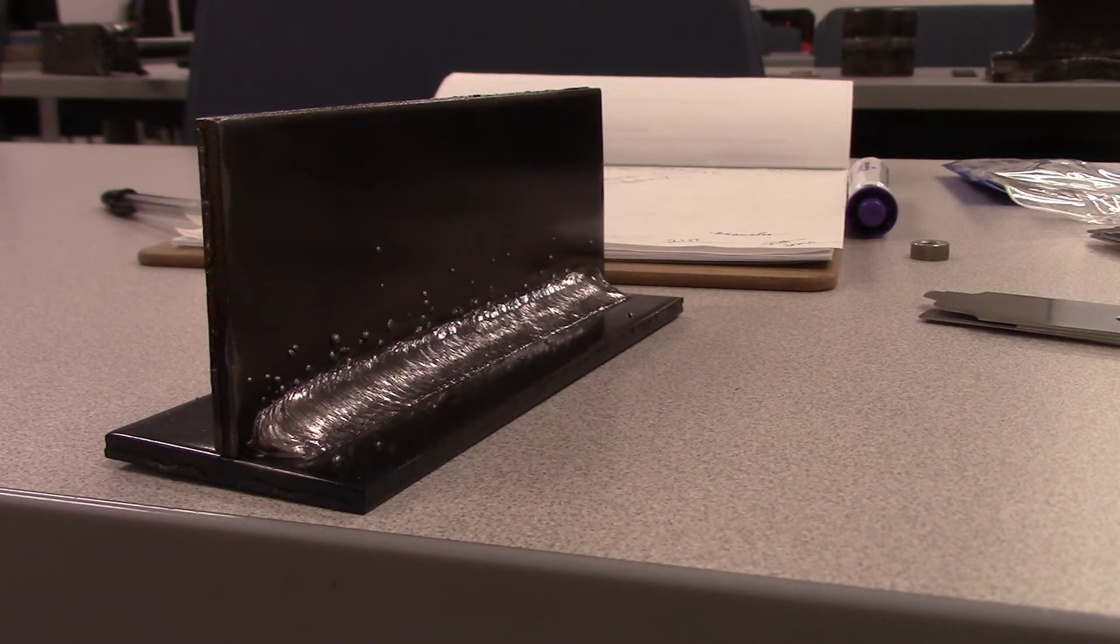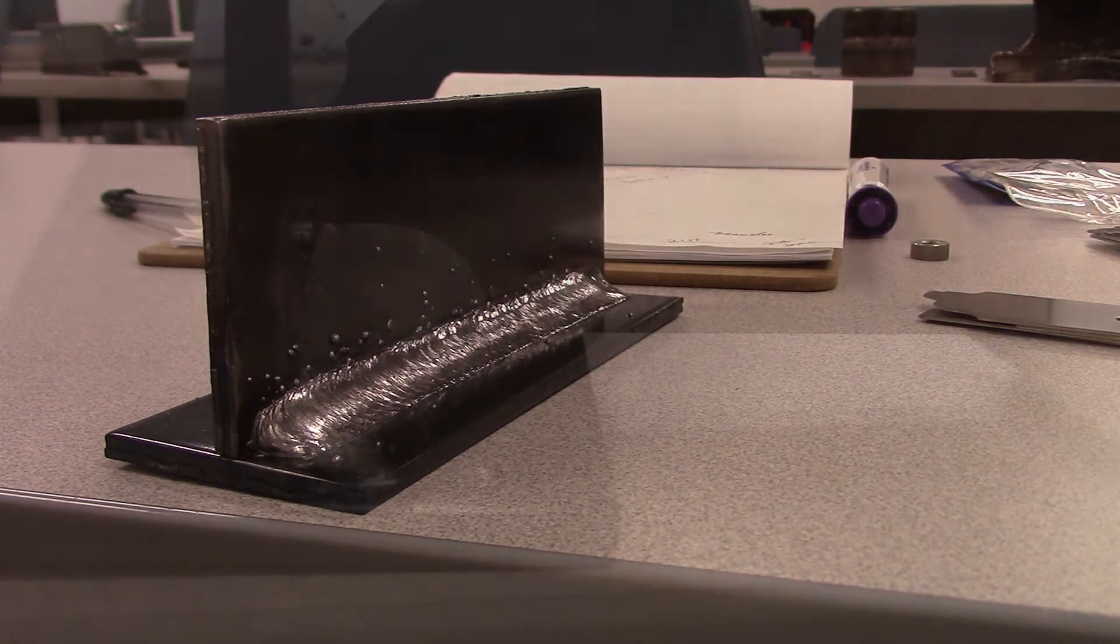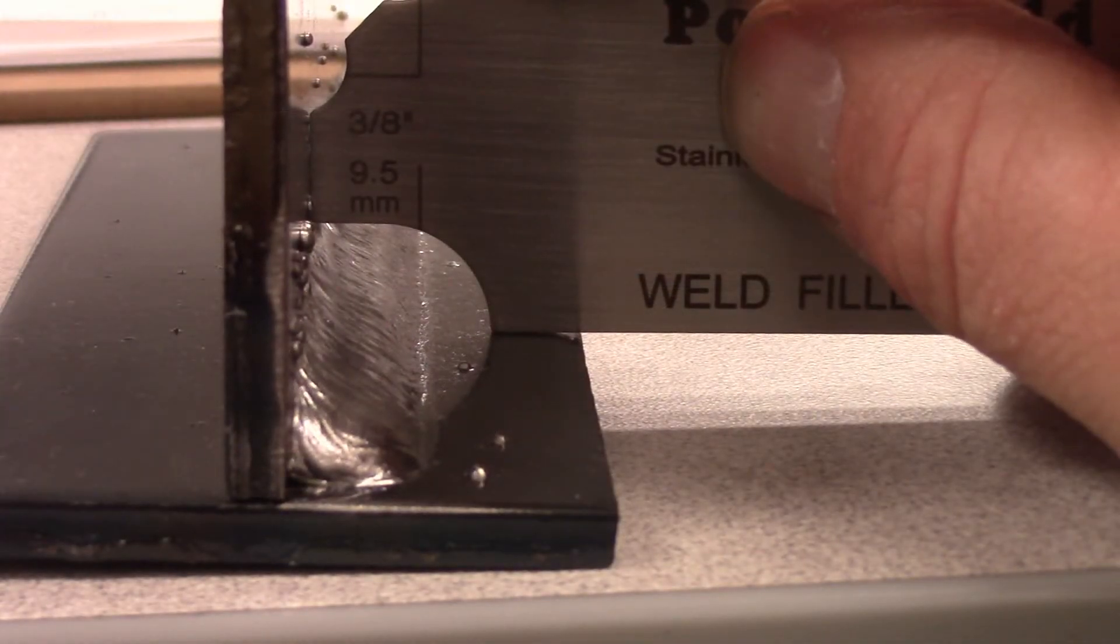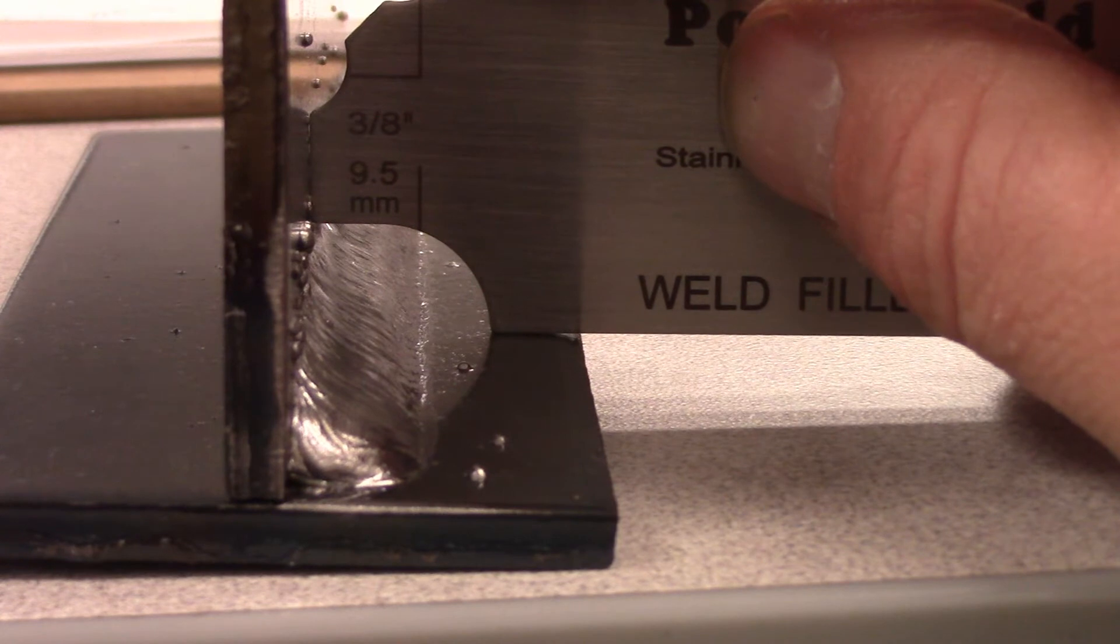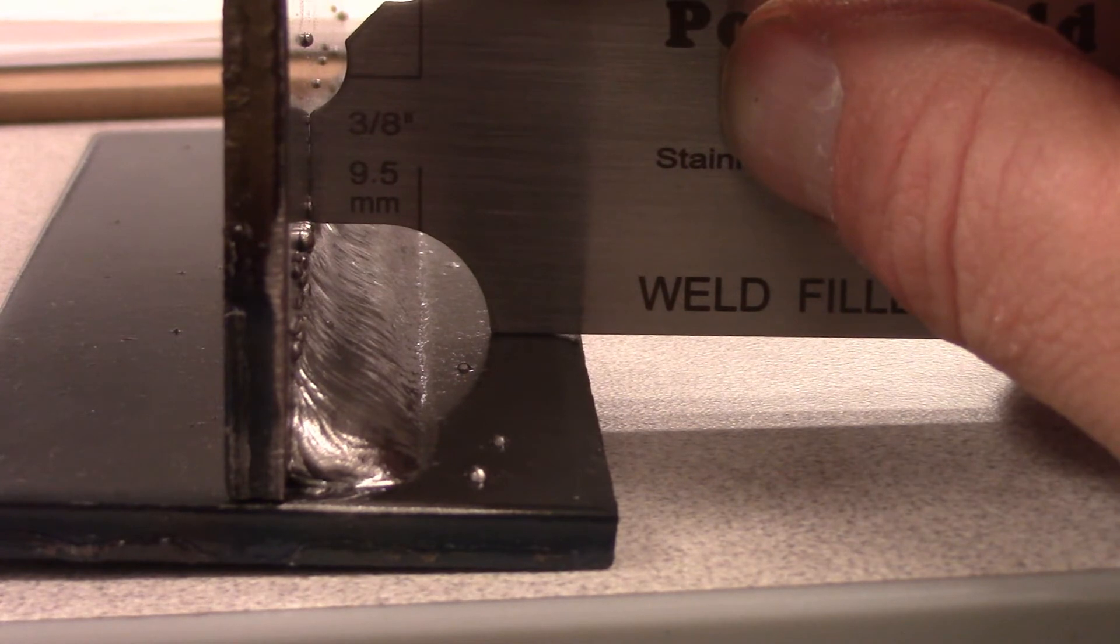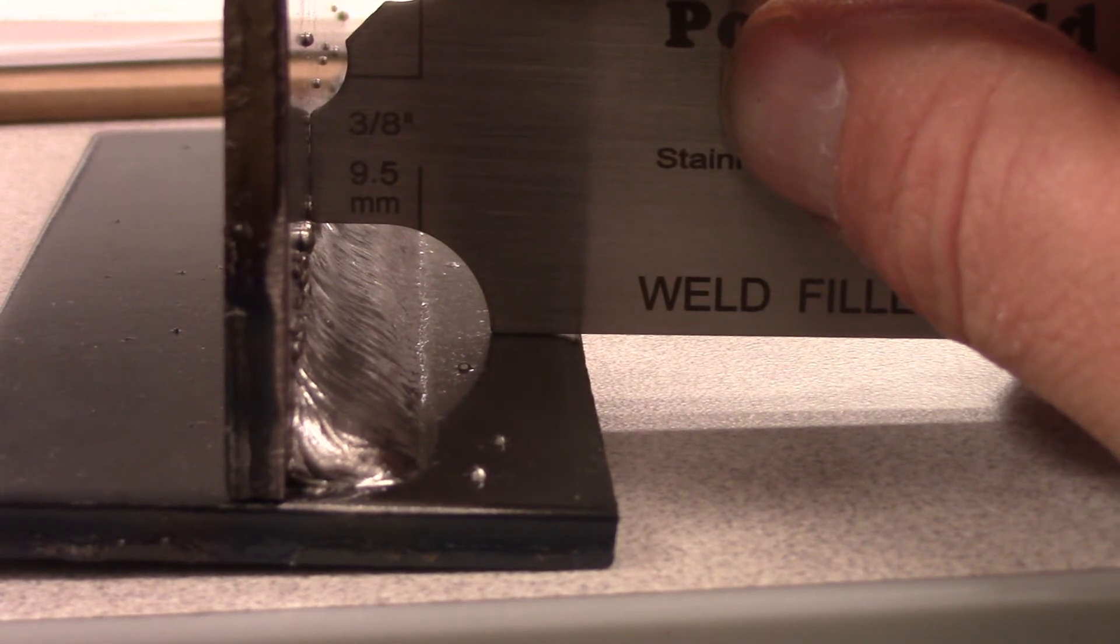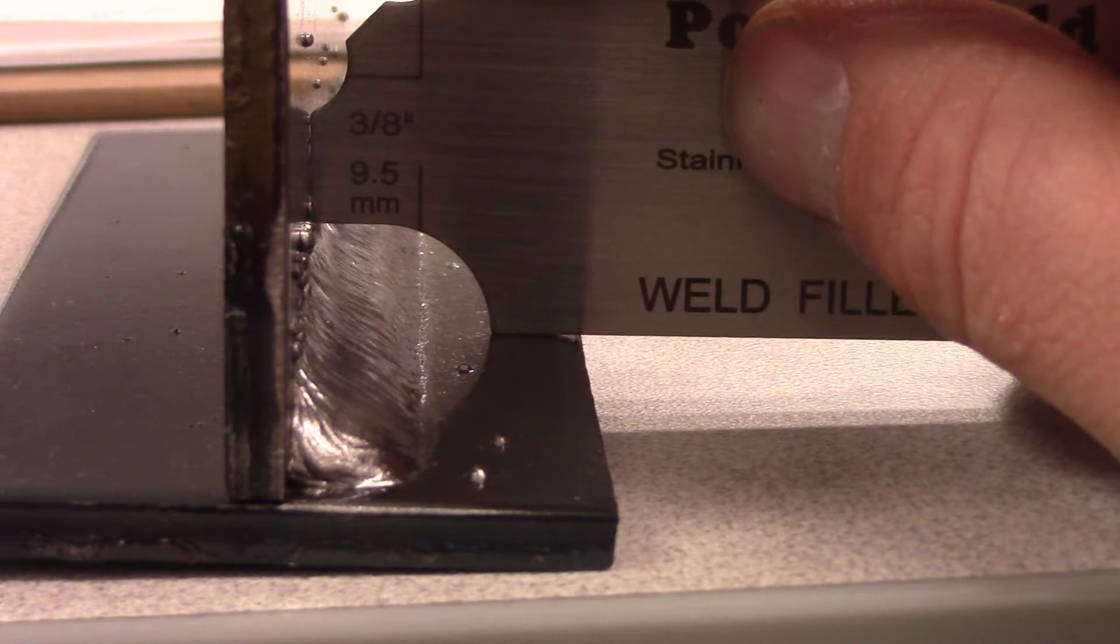Now we're looking right down that fillet weld and they actually have the other side in metric for some reason, but that's a 3/8 leg size and you can see that mark is right on the toe of that weld. That's a good look at that. That's the proper way to measure that. So if you were at a 3/8 leg size, that's right on the money.